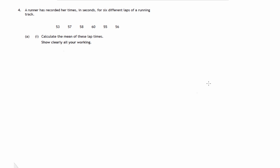So this is question 4 from paper 2 of the 2014 National 5 Maths exam. We've got a runner who's recorded times as this. So we've got six pieces of data and we're asked to calculate the mean of these lap times, showing clearly all our working.